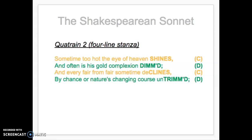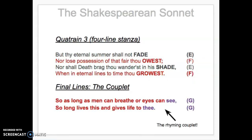Moving forward to the second quatrain — lines five through eight — he continues by saying basically negative things about summer. He says 'sometimes too hot the eye of heaven shines, and often is his gold complexion dimmed, and every fair from fair sometimes declines, by chance or nature's changing course untrimmed.' He's saying summer could be too hot, the sun goes down, and even though summer is a beautiful time, it ends and leads to fall and then winter.